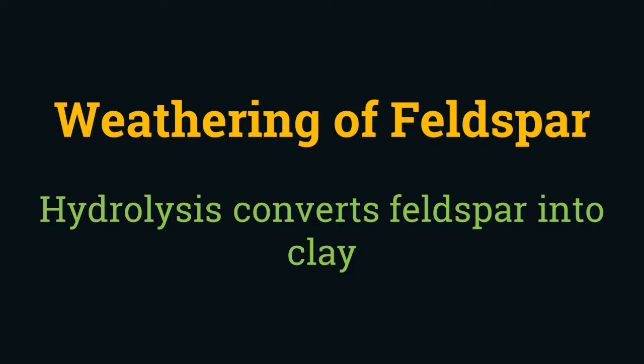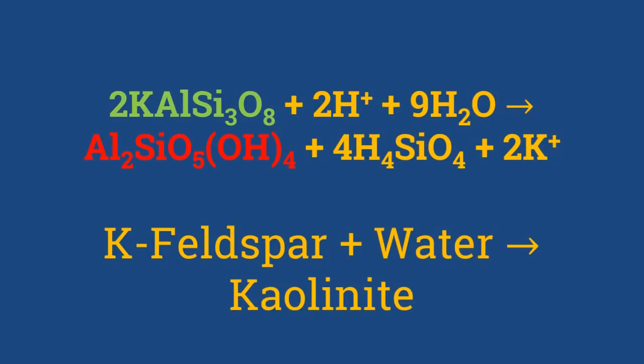Chemical weathering of Feldspar minerals involves hydrolysis, in which water molecules rapidly replace various cations in a mineral, thereby transforming it into a clay mineral. When KAlSi3O8, or alkali Feldspar, reacts with water, it forms kaolinite — a clay mineral — and releases the potassium cation along with silicic acid.